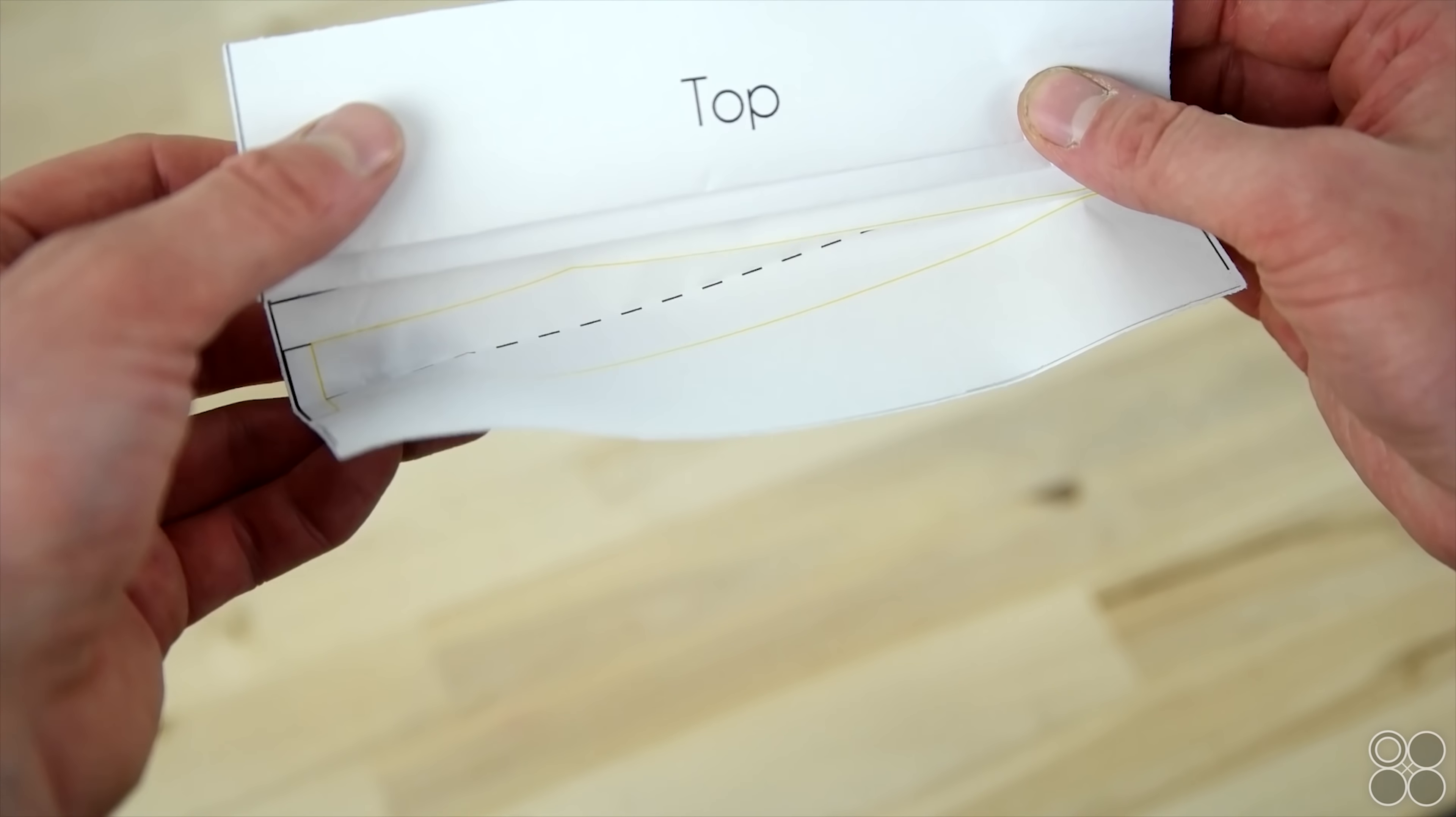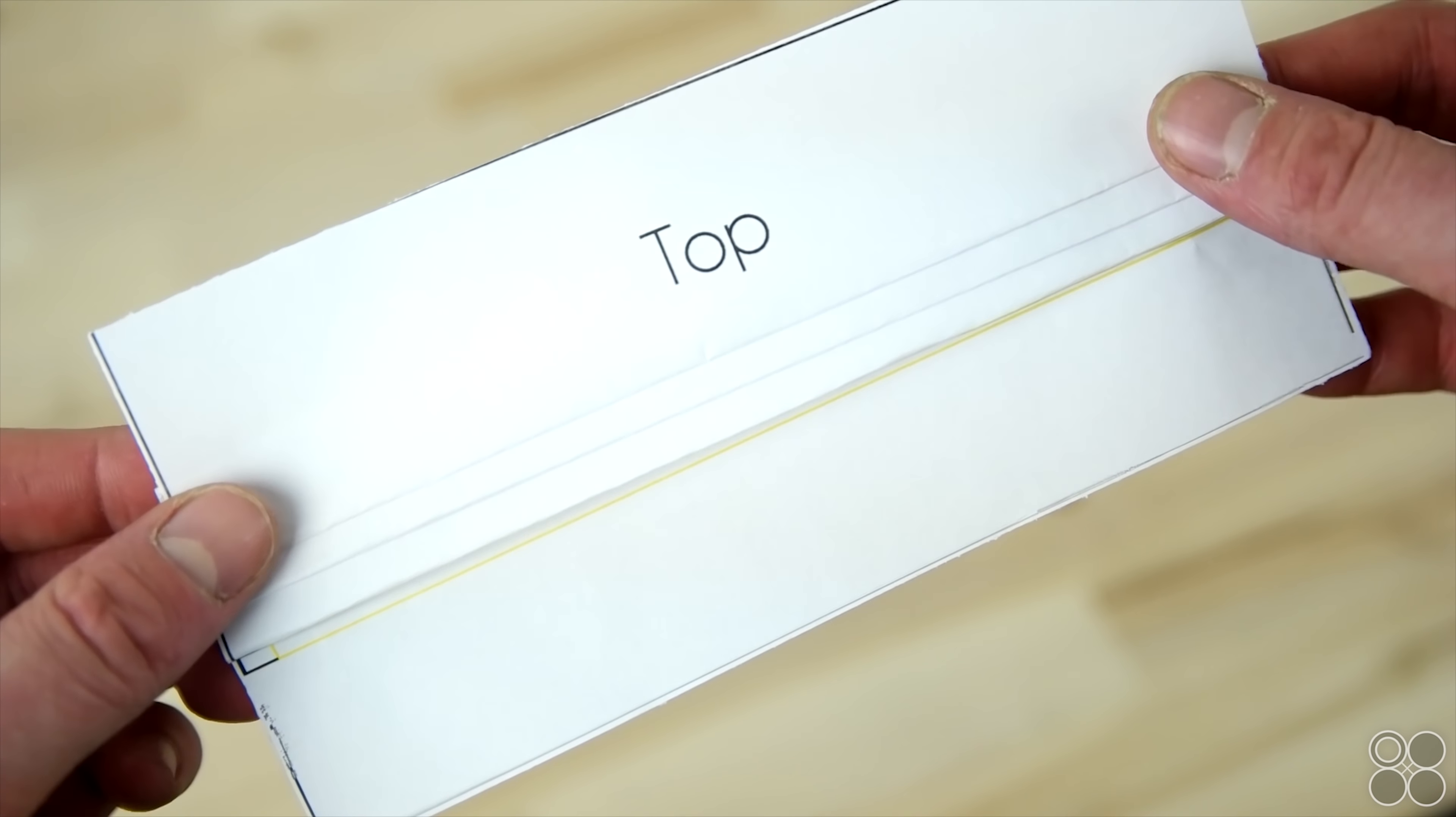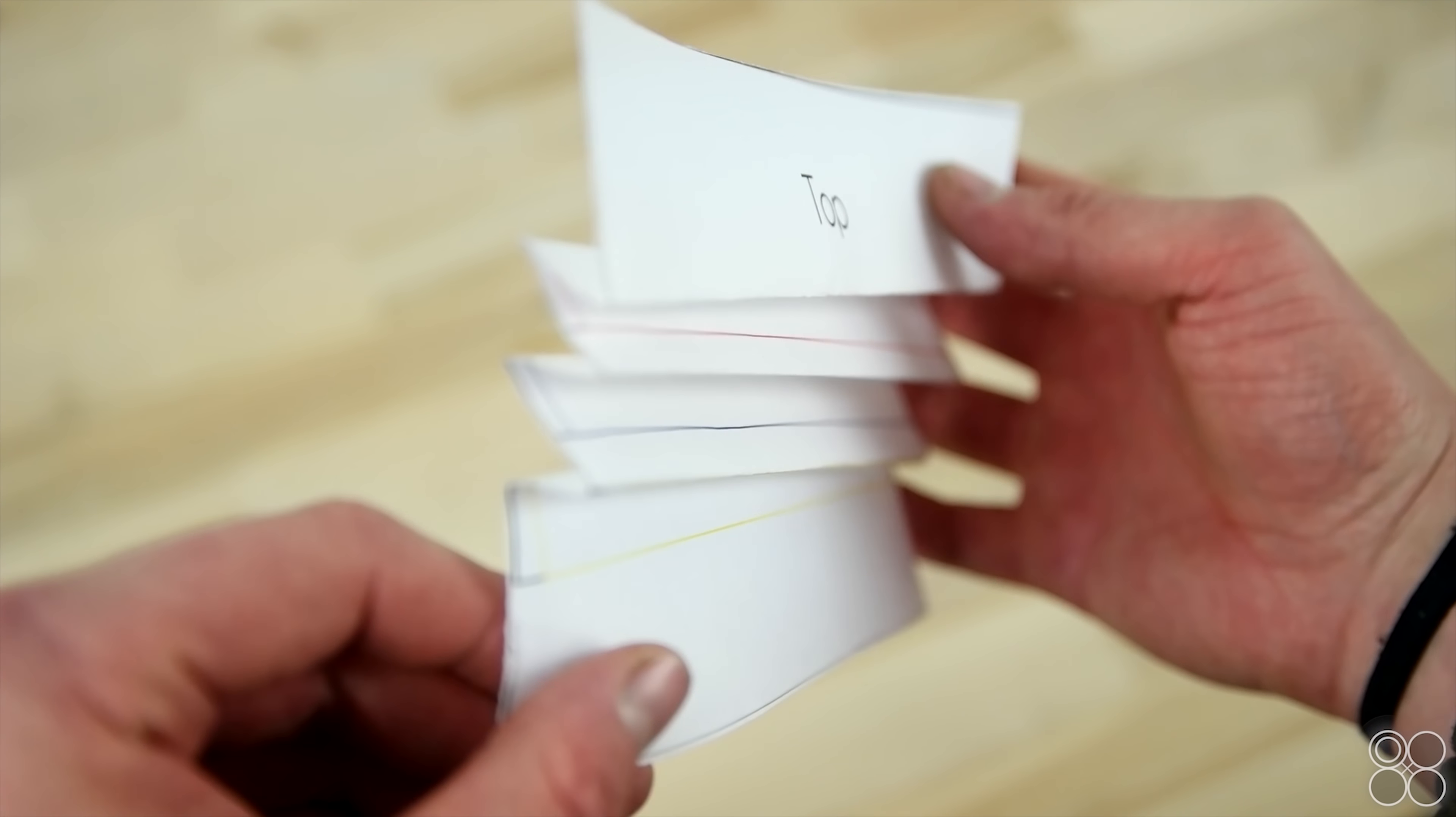So we're going to show you with the paper first, you're going to want to go red to red, blue to blue, and yellow to yellow, and this creates those folds in front as you can see. Now you're going to want to do the same thing with your fabric.